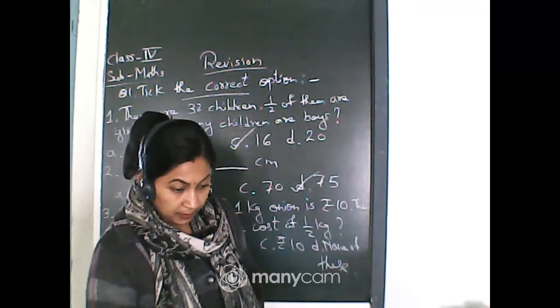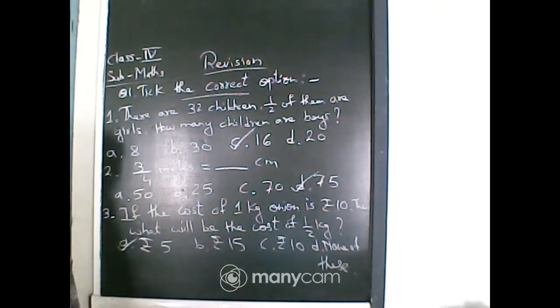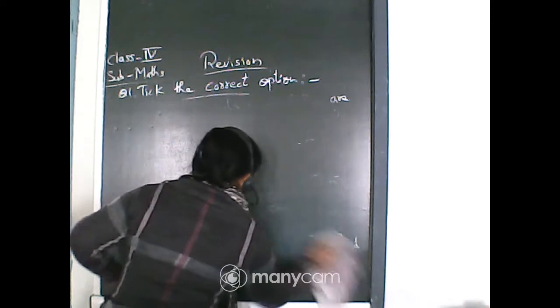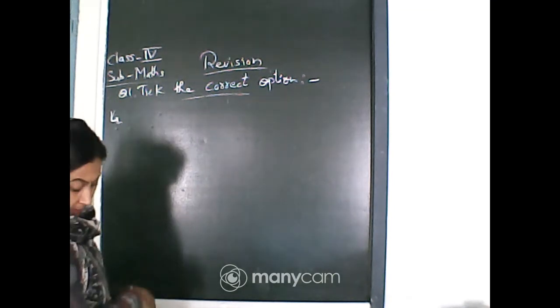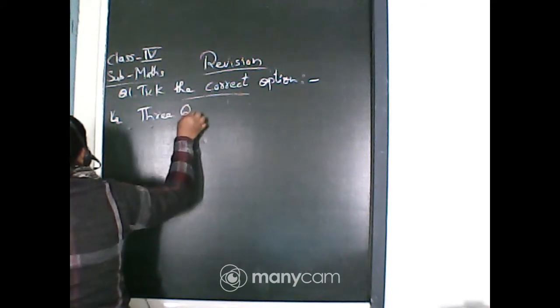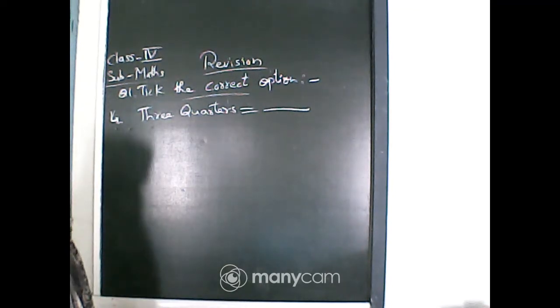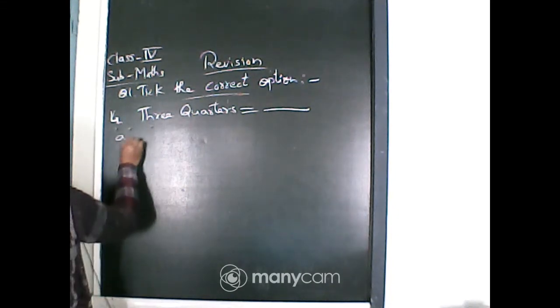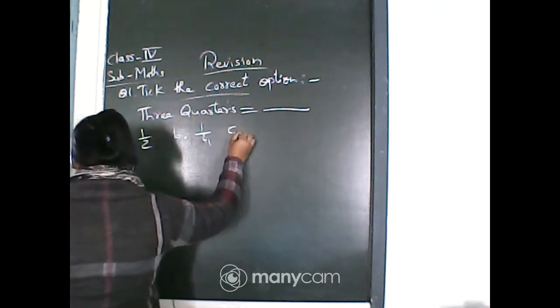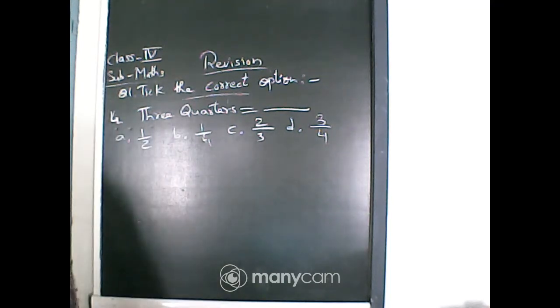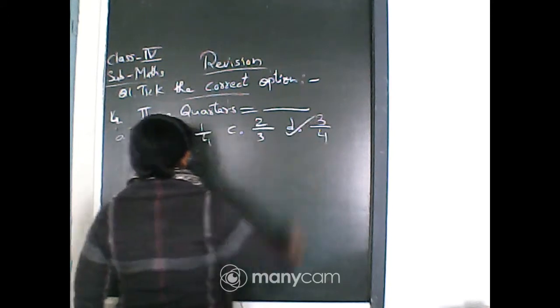Question number 4: 3 quarters equals dash. You have to find out the meaning of 3 quarters. The options are 1/2, 1/4, 2/3 or 3/4. Quarter means 1/4, and since it is 3 quarters, that means 3 times 1/4, which is 3/4. So 3/4 is the answer.